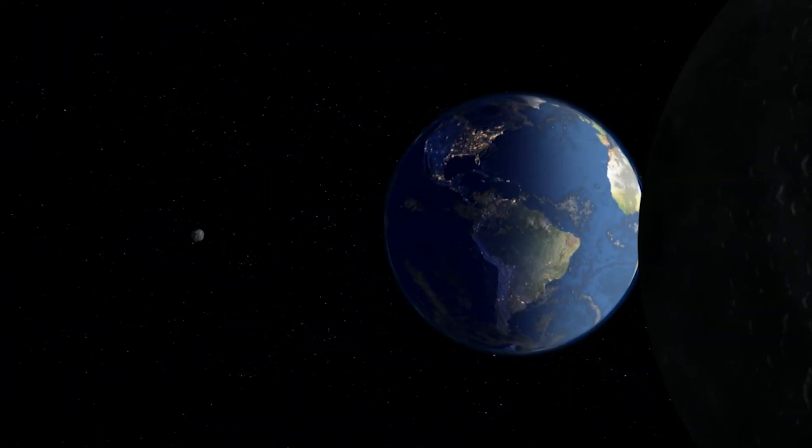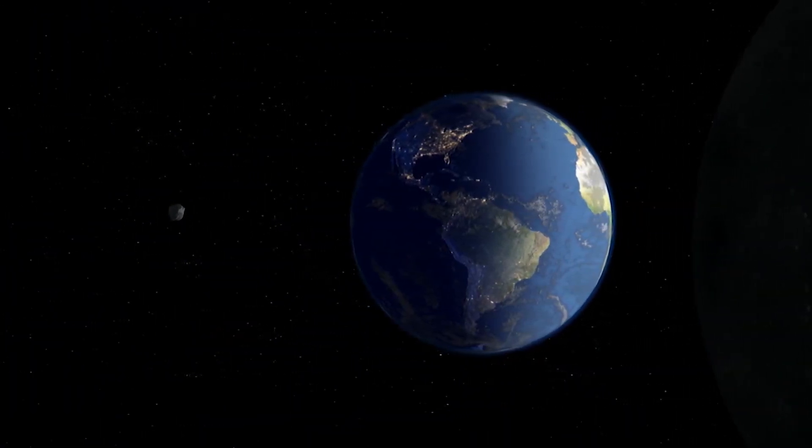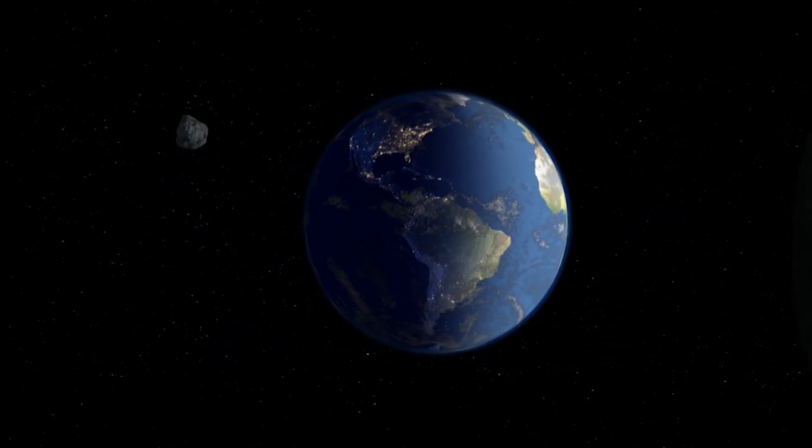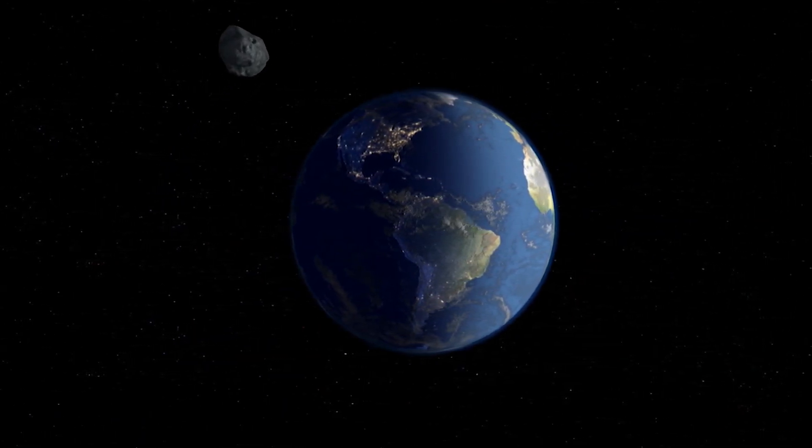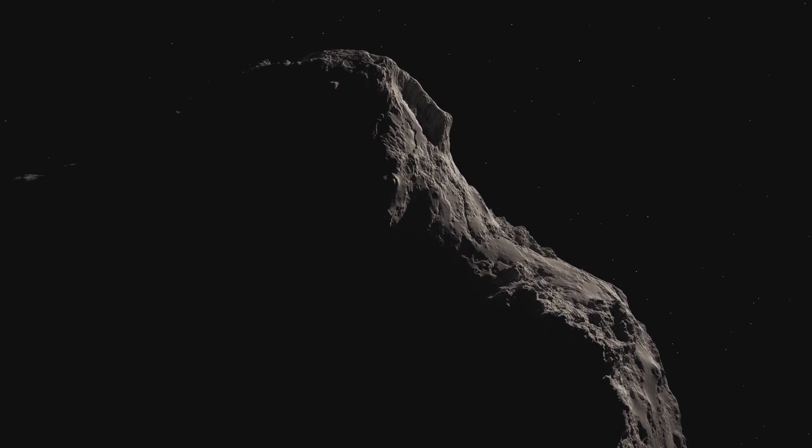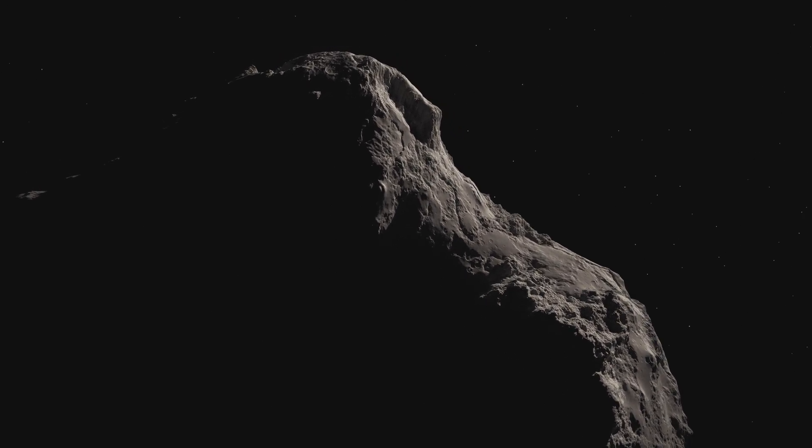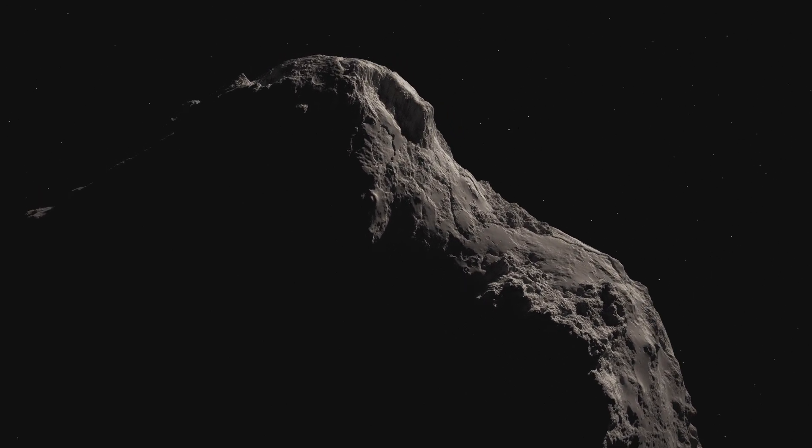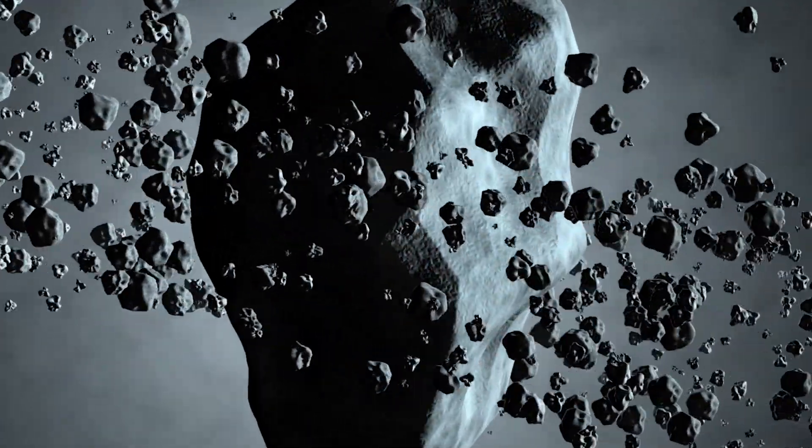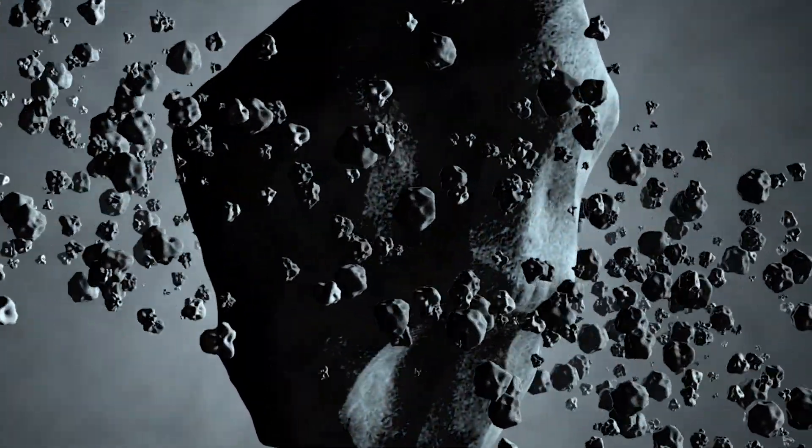In terms of its composition, astronomers believe it's likely a rocky body, similar to many of the asteroids in the inner solar system. However, we can't say what it's made of without studying it up close. It could be a chunk of rock, a metallic body, or even a loosely bound pile of smaller rocks held together by gravity.